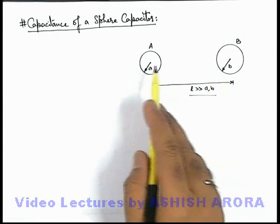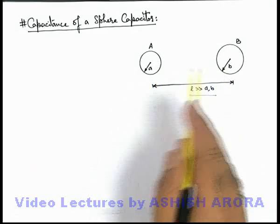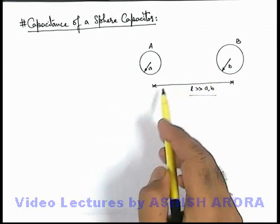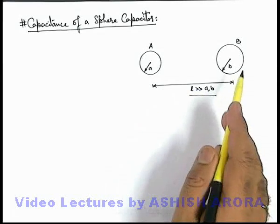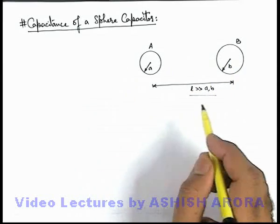Here you can see there are two spheres A and B which are isolated from each other, separated by a large separation l. In this situation, if we wish to find out the capacitance of this system.